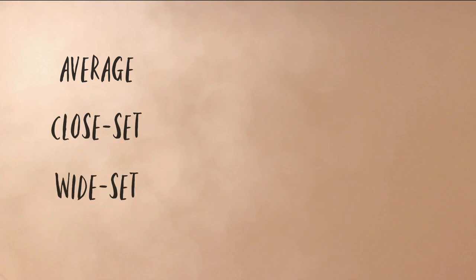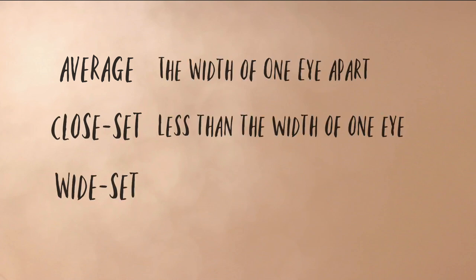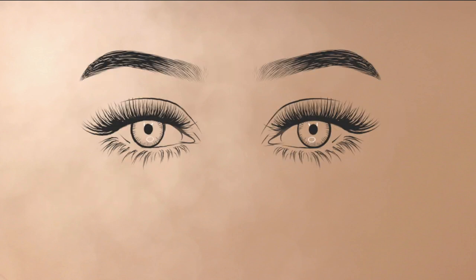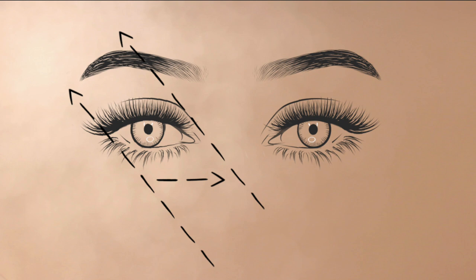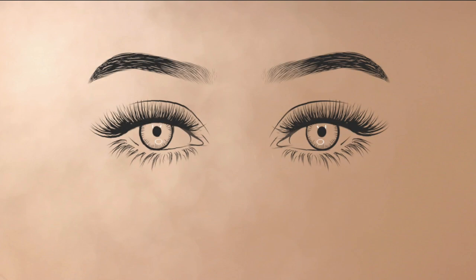Moving on to close set. Close set eyes typically have some natural dark shadowing due to the fact that the eyes are set closer to the nose, so we want to add some lightness and draw the eyes outwards. To start our placement lines, we use the dimple of the nose and the edge of the eye, but it doesn't reach the brow. The nose and the eye create an angle going upwards towards the temple, which is going to draw the eyes outwards. For the inner edge, we use the same theory as average, creating a parallel line at that inner corner. So for brows, we want to pull those eyes apart again and add some lightness to that inner corner. The easiest way to do this is to start the brows a little further out.